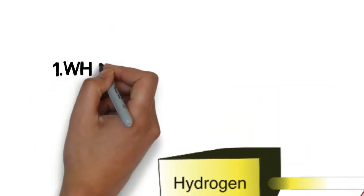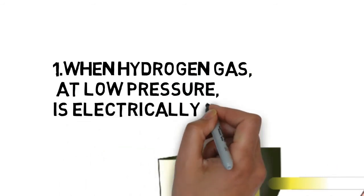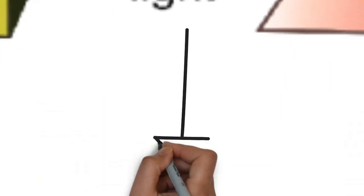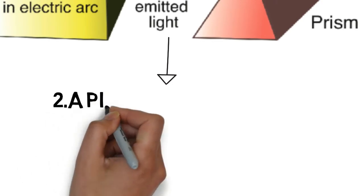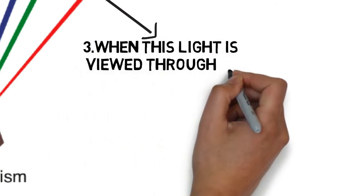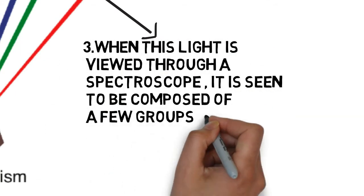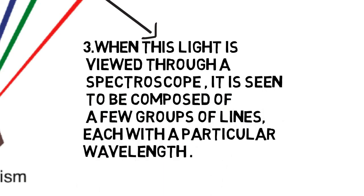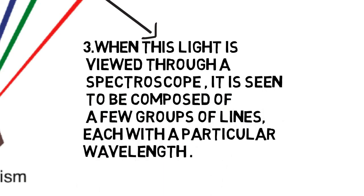Line spectrum is widely used to identify different types of elements such as hydrogen. Hydrogen, the simplest but most abundant element in the universe, is the most studied element. Therefore, let us learn more about the formation of the hydrogen line spectrum. When hydrogen gas at low pressure is electrically discharged in a vacuum tube, a pink light is emitted. When the light is viewed through a spectroscope, it is seen to be composed of a few groups of lines, each with a particular wavelength.